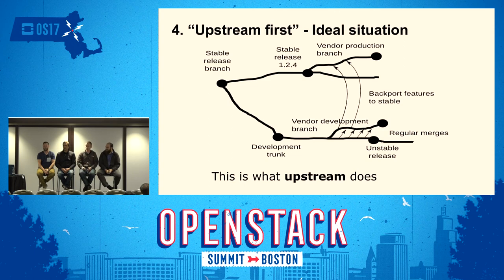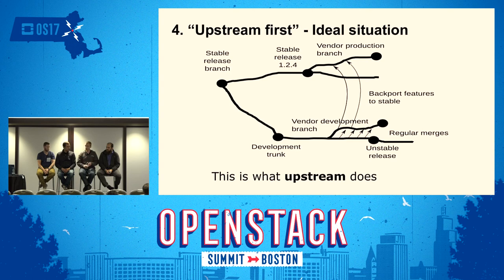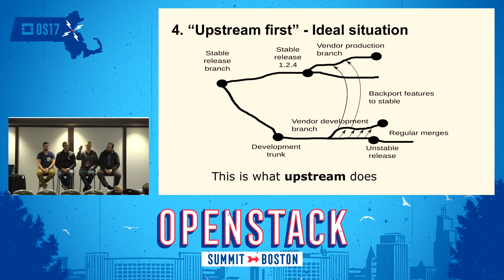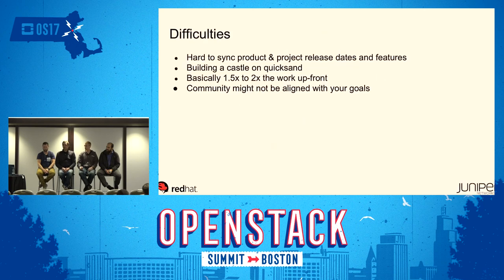The solution is upstream first: you develop against the master branch, merge from master onto your development branch very regularly so you always have a clean merge, and then get that code onto master as soon as you can. That reduces all your merge costs and maintenance overhead. Then once the code is merged into the main line, you backport it to your vendor production branch — the stable product you're delivering to customers. Security fixes and bug fixes are primarily put on master first and then backported back, and this is the best way to work with open source.